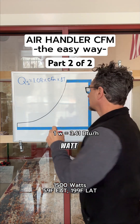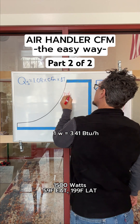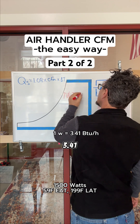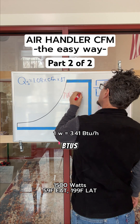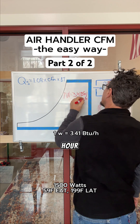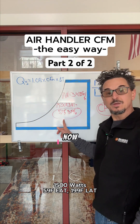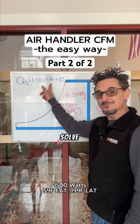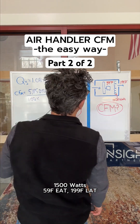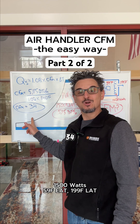One watt equals 3.41 BTUs per hour. So now we have the BTUs per hour, and we can solve for CFM — which equals a whopping 34 CFM.